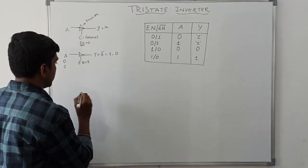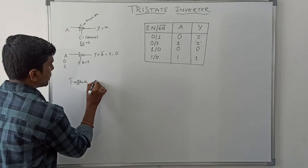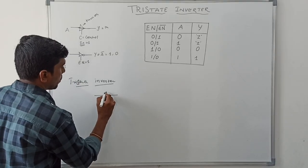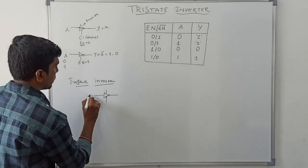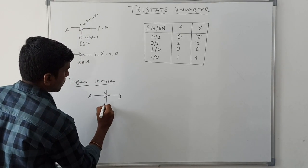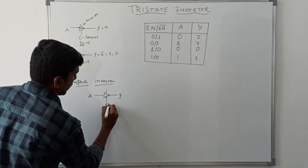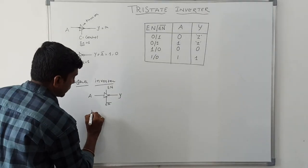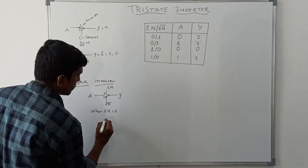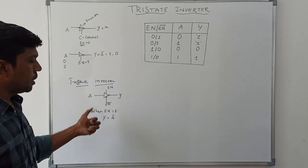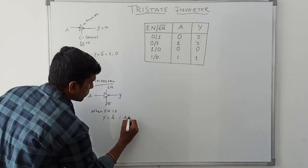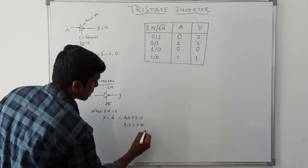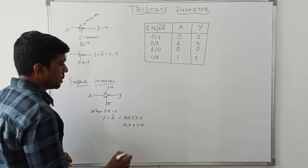Now I am going to explain the tri-state inverter. The basic symbol shows A as the input and Y as the output, with enable bar and enable as the two controlling inputs. When enable equals one, Y equals A̅ — the complement of A. So when A is zero, the output is one; when A is one, the output is zero. This is the basic operation of the tri-state inverter.